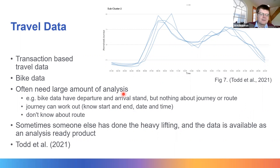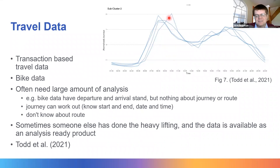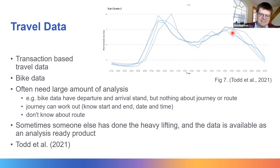We can work out some things: we know where the journey started and finished, and the date and time, so you can make an educated guess about the route, but we don't really know much about it. A typical output from this data would be a graph showing a strong peak during the morning rush hour with lots of people collecting and returning bikes, and then a more extended peak in the evening. This is a great example of data needing heavy lifting to reach a useful state — Todd et al. 2021 is a great reference discussing the process of creating output data from this.